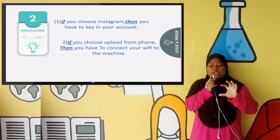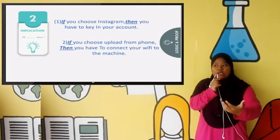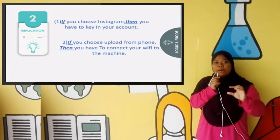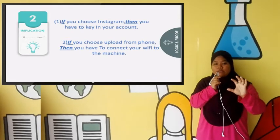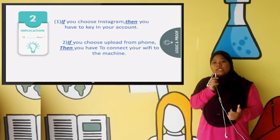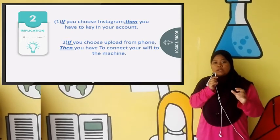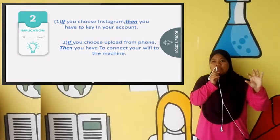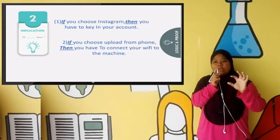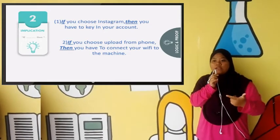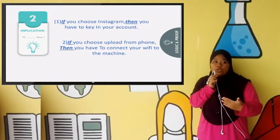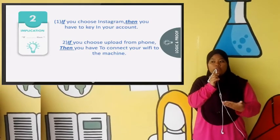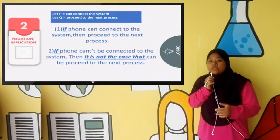The relation topic that I can say in this video is the part when you choose the Instagram. If you choose the Instagram, then you key in your account. So we use the topic of implication, if-then. Also, if you upload your phone, if you choose to upload your phone, then you can connect your phone to the machine.